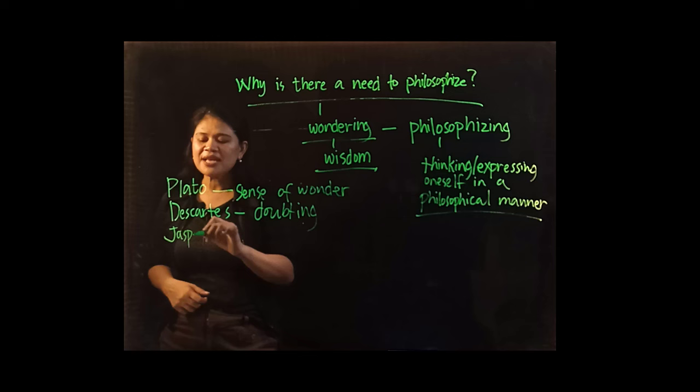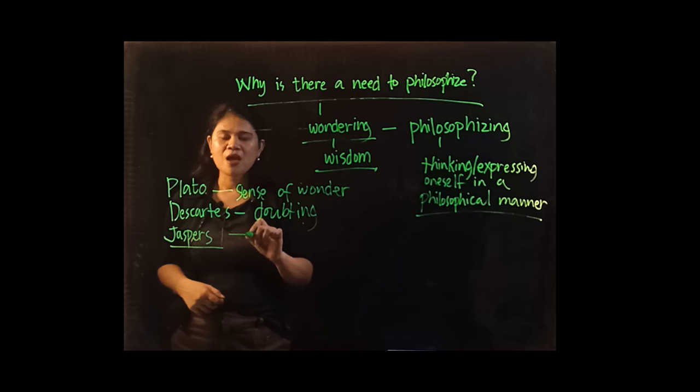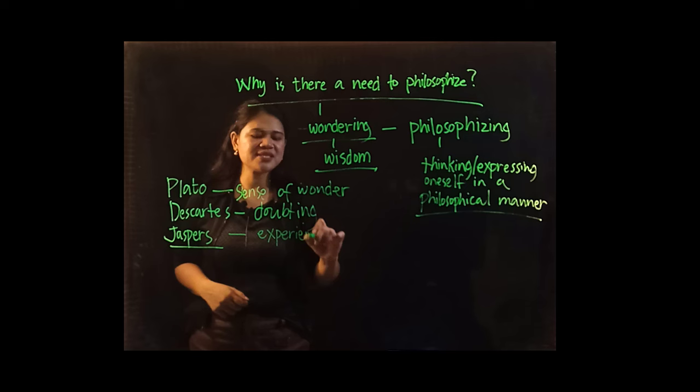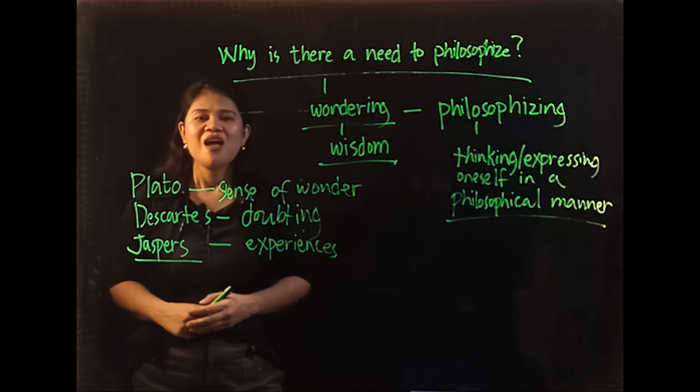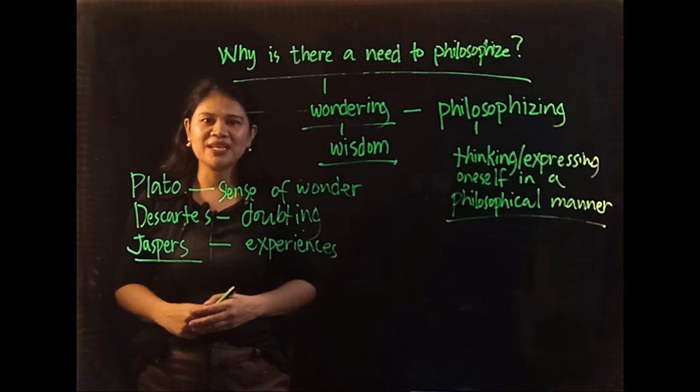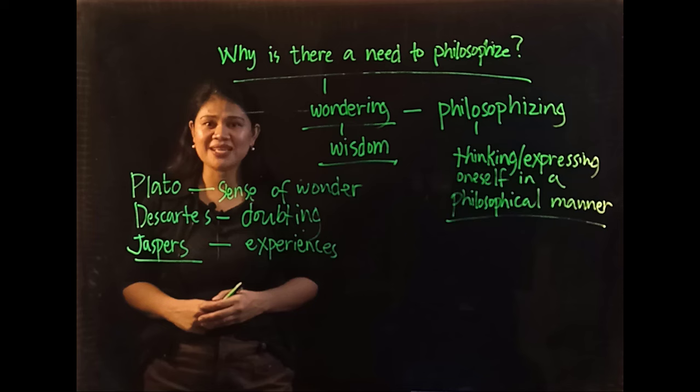Swiss-German philosopher Jaspers believed that it is through our experiences that we have to philosophize. Jaspers thought that when man is confronted with experiences that challenge his ideas, it makes a man helpless, stressed, or even depressed. And he called these experiences limit situations.